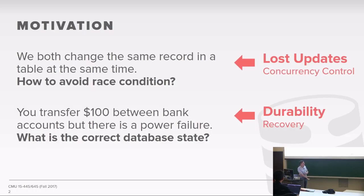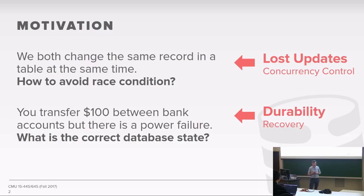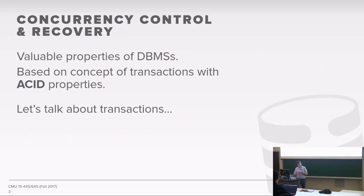These two problems are roughly called the lost update problem and the durability problem. The solution inside our database management system are either the concurrency control protocol, which we'll talk about today, or the recovery protocol, which we'll talk about in a couple of weeks. These things are closely intertwined — the concurrency control needs to know what the recovery system is doing, and vice versa, in order to make sure we don't lose data or end up with incorrect data.